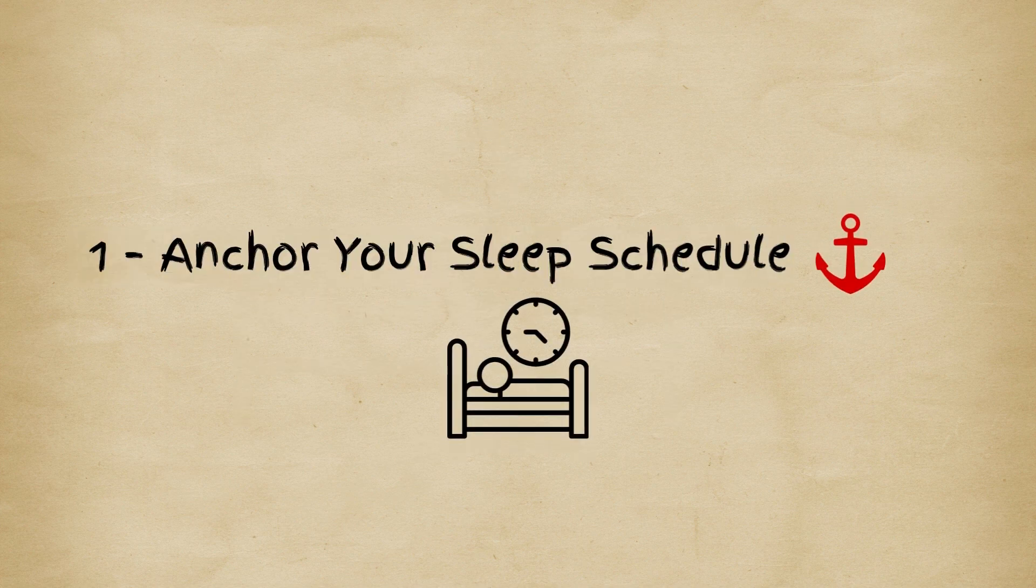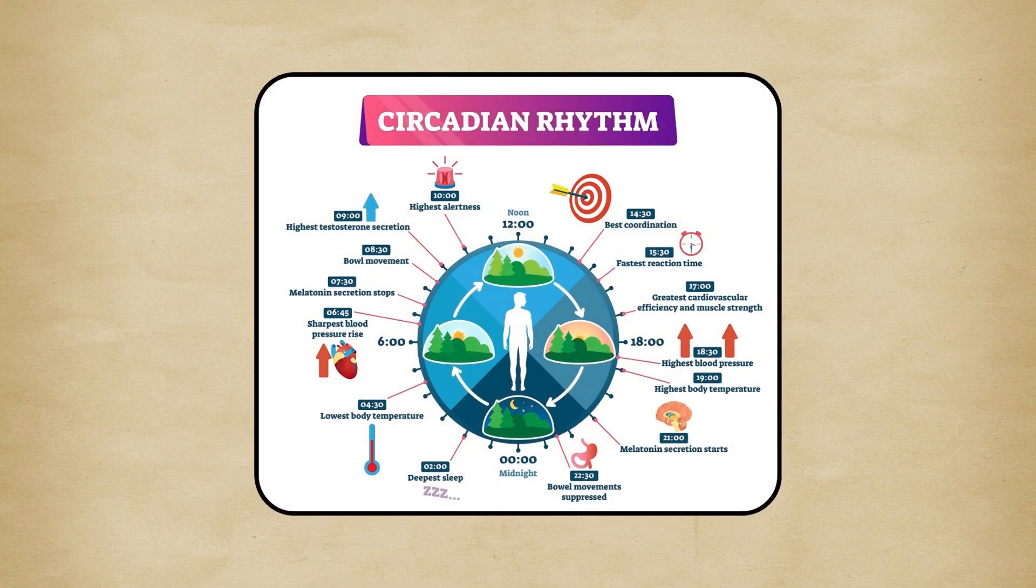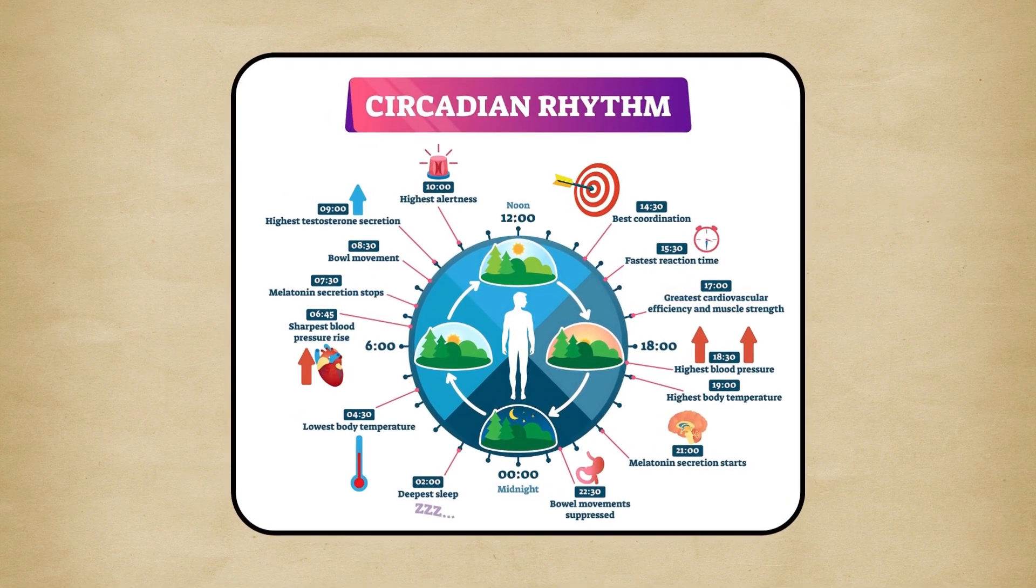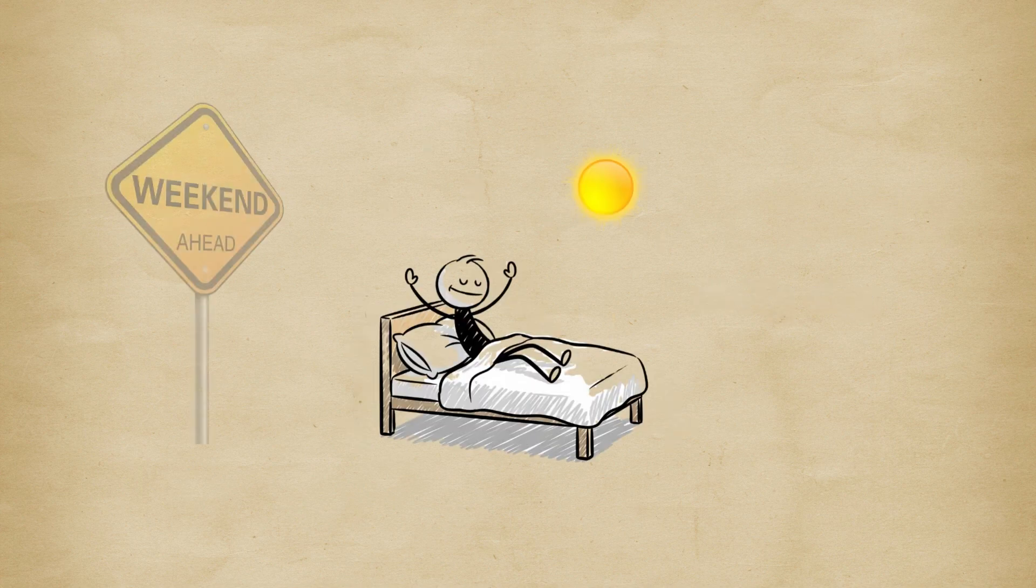1. Anchor your sleep schedule. Let's start with your body's internal clock, your circadian rhythm. It's the natural 24-hour cycle that controls your sleep and energy. To reset it, go to bed and wake up at the same time every day, even weekends.